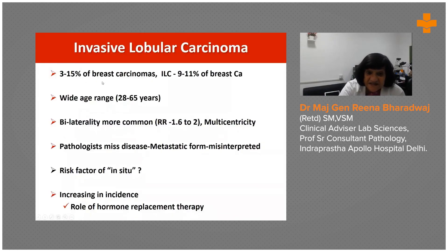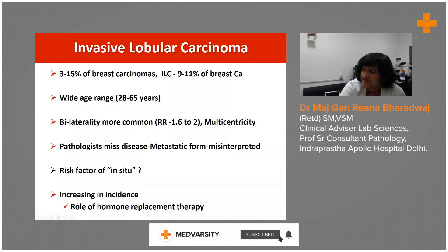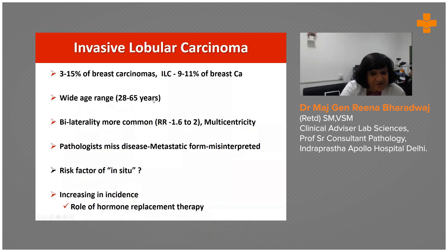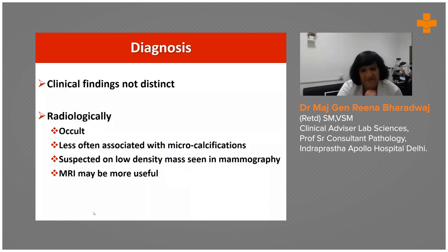ILC occurs in as many as 10% of breast carcinomas, with a wide age range from as young as 28 years to older — six decades. Bilaterality is very common, as is multicentricity. Pathologists often miss this disease, especially in the metastatic form. With increasing incidence, we cannot afford to miss these lesions, particularly given hormonal replacement therapy.